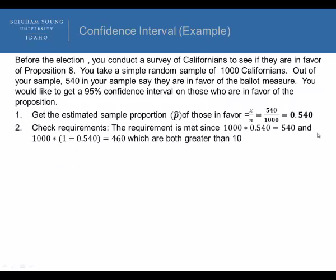The next step is we want to check the requirements. If we take the sample size of 1,000 times p-hat, that's equal to 540, and then a sample size of 1,000 times 1 minus p-hat, that's equal to 460. Both 540 and 460 are both greater than 10, so the requirement is met.